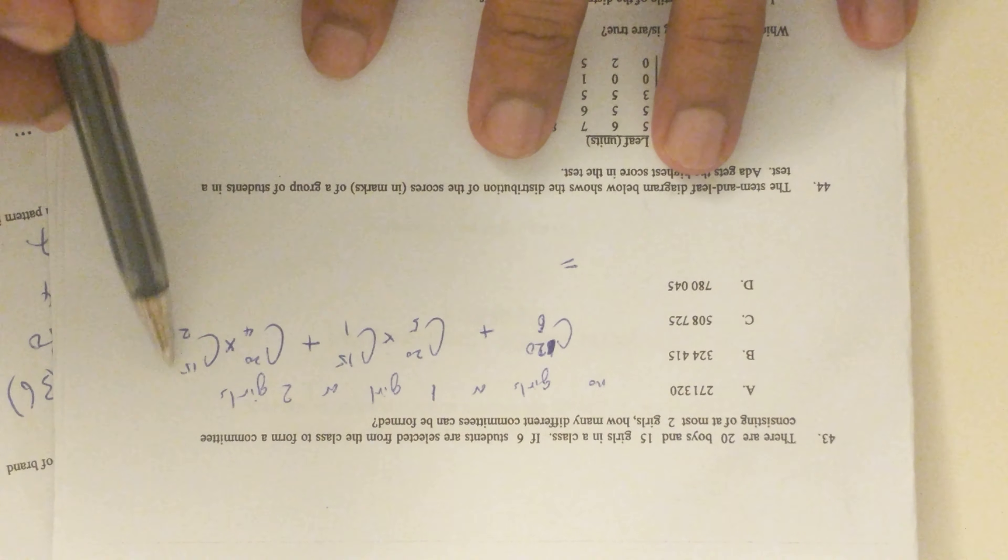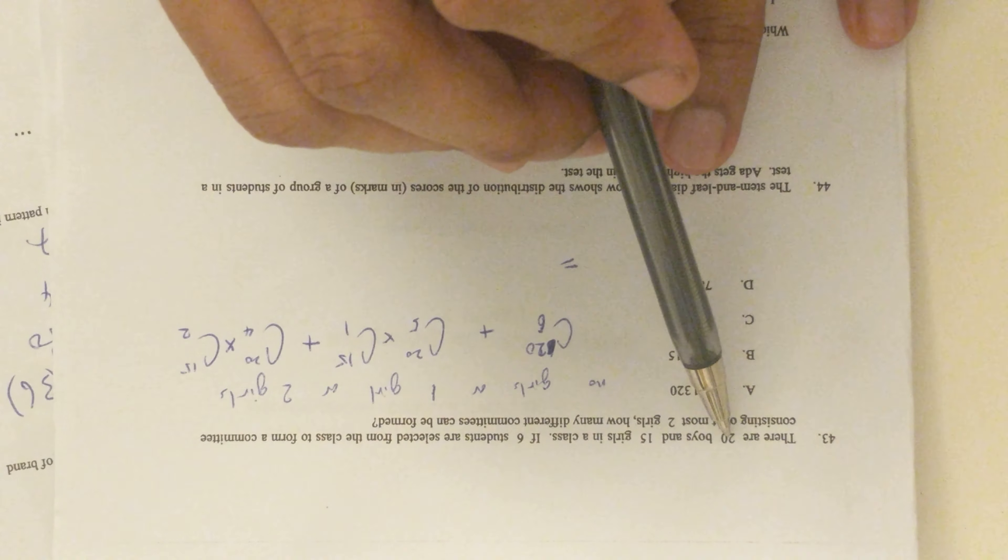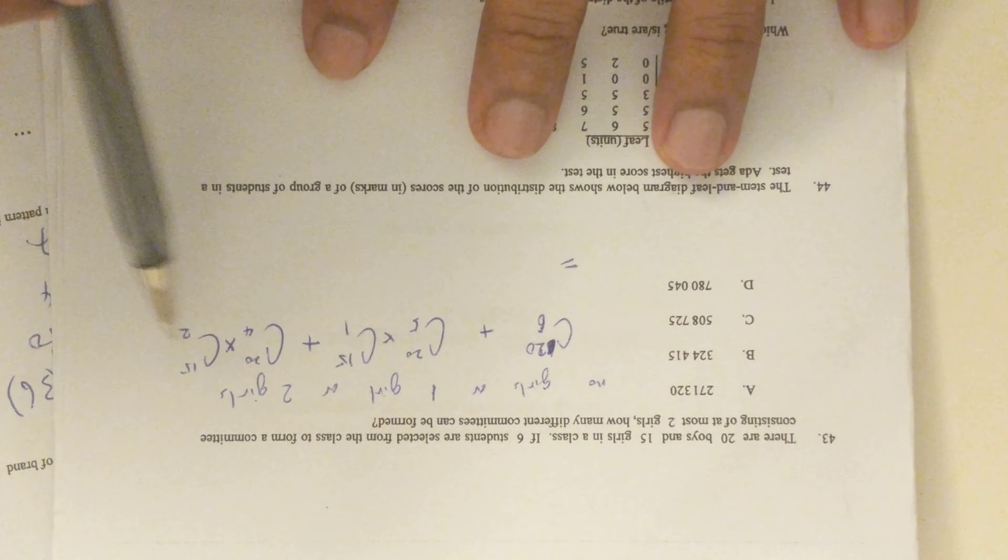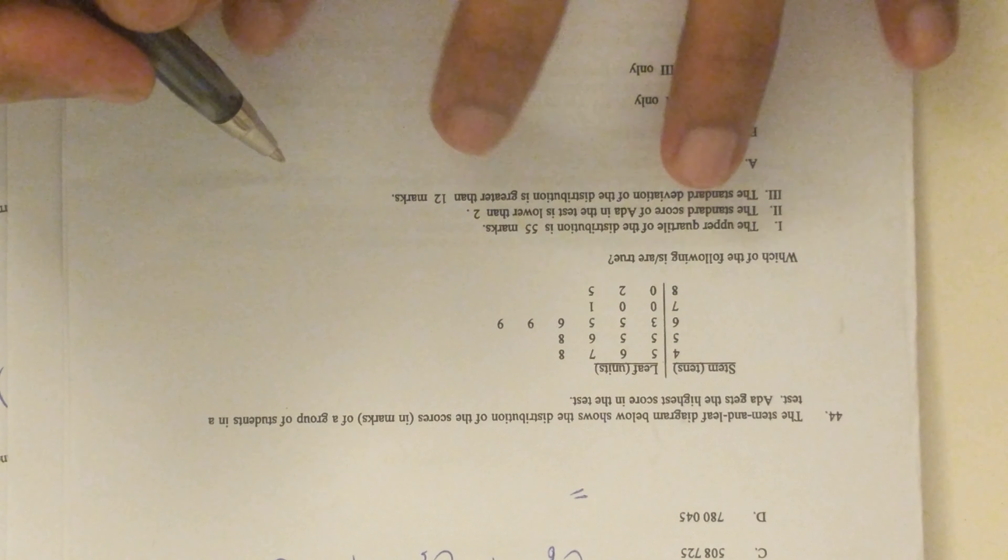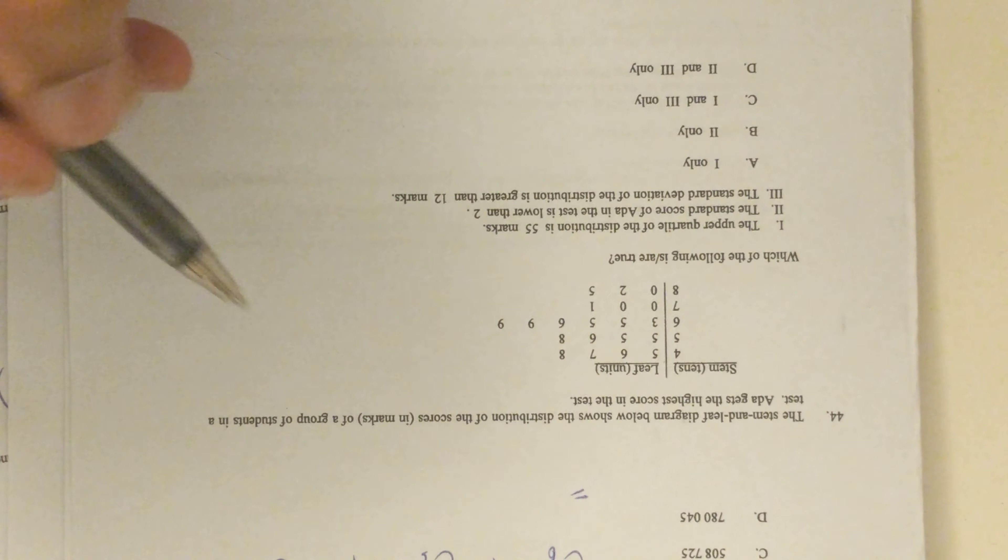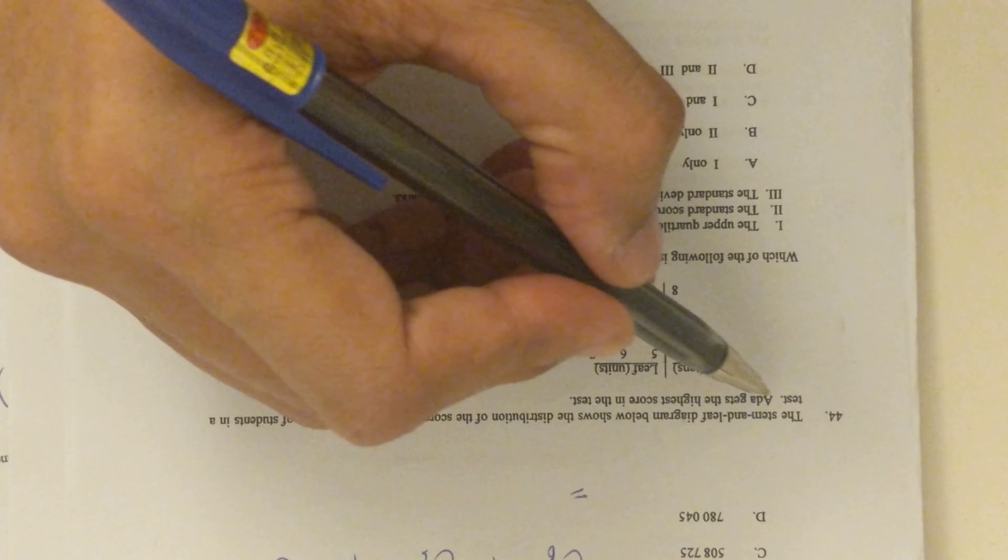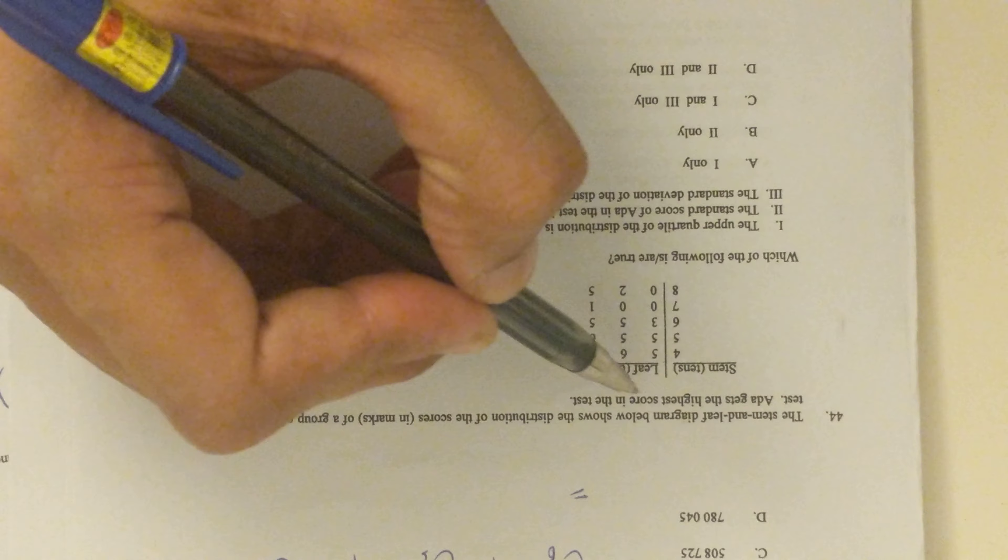So 20C4, and if you add them you'll get the answer. For problem 44, you need to read the question carefully. They give you a stem and leaf diagram and say that Ada has got the highest score in the test.